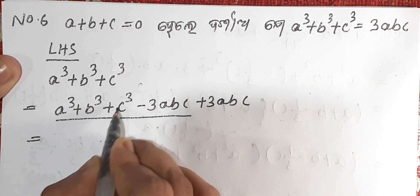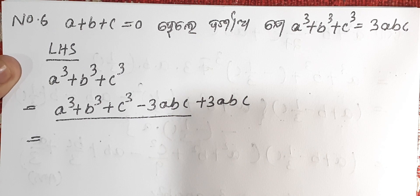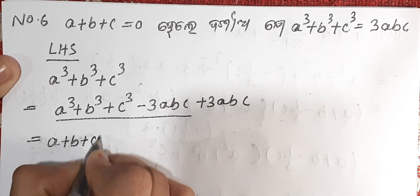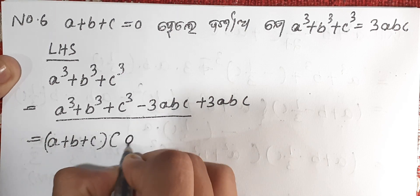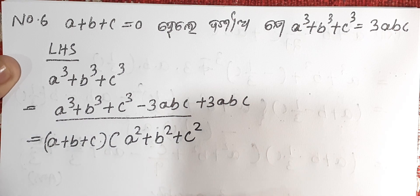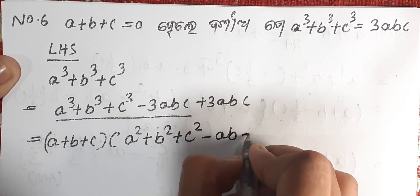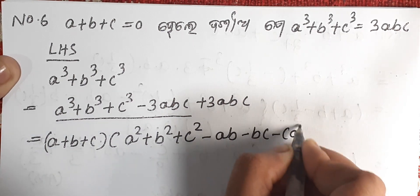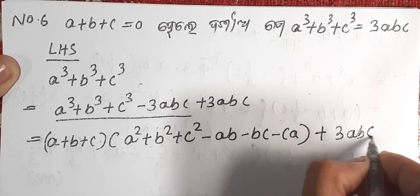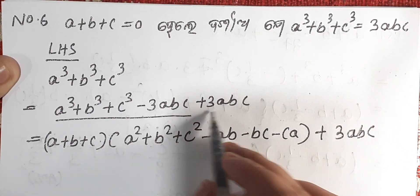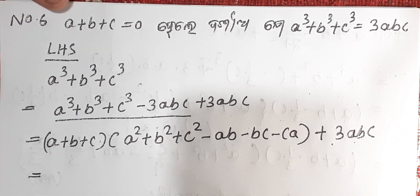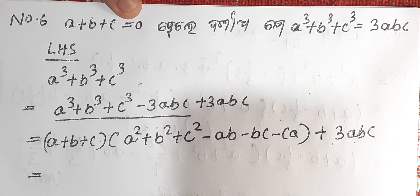A cube plus B cube plus C cube equals A plus B plus C into A square plus B square plus C square minus AB minus BC minus CA, plus 3ABC.